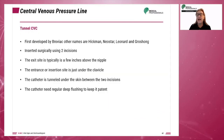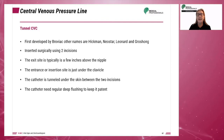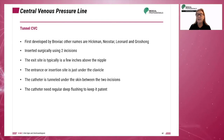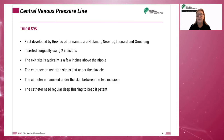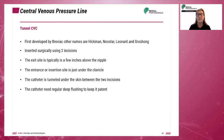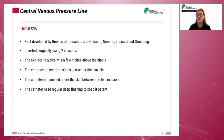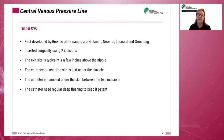Tunneled central venous catheters or CVCs are called by many different names. Examples include Broviac, Hickman, Neostar, Leonard, and Groshong. They are inserted surgically using two incisions. The exit site is typically a few inches above the nipple, and the entrance or insertion site is just above the clavicle. The catheter is tunneled under the skin between the two incisions and needs regular flushing to keep it patent.